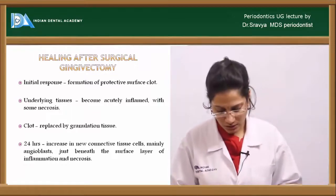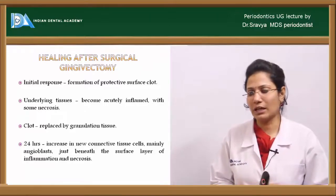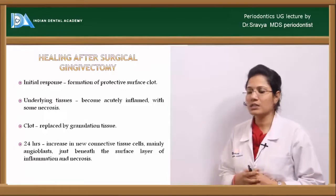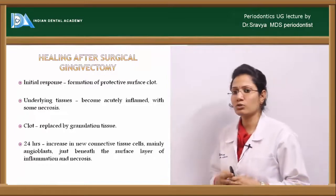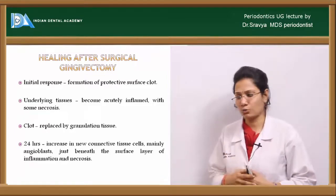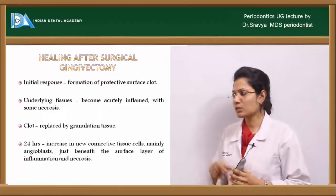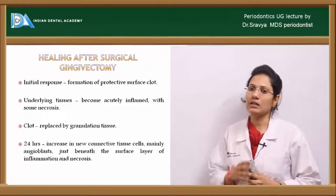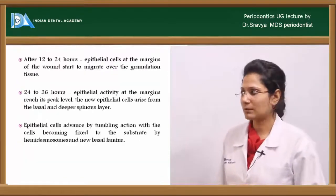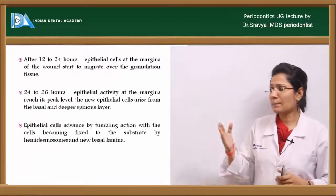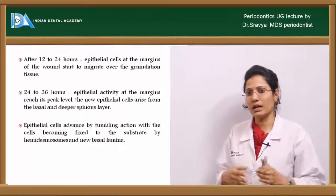Post gingivectomy, a periodontal pack can be placed to cover the raw wound area. Healing proceeds as follows: initially, a protective surface clot forms; the underlying tissues become acutely inflamed with some tissue necrosis, and the clot is replaced by granulation tissue. Within 24 hours, new connective tissue cells — mainly angioblasts — proliferate beneath the surface, with neoangiogenesis occurring. Epithelial cells at the wound margins then begin to migrate over the granulation tissue.